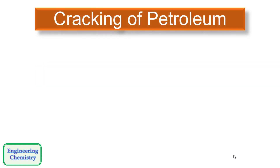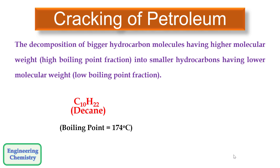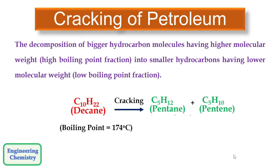Cracking of petroleum is defined as the decomposition of bigger hydrocarbon molecules having a higher molecular weight, or high boiling point fraction, into smaller hydrocarbons having a low molecular weight or low boiling point fraction. For example, decane having the formula C10H22 with a boiling point of 174°C, when subjected to cracking, gets converted into two molecules: pentane and pentene, both having a low boiling point of around 36°C. This conversion is called cracking of petroleum.